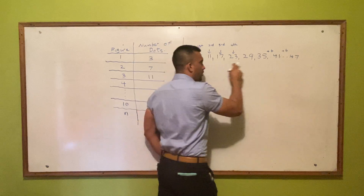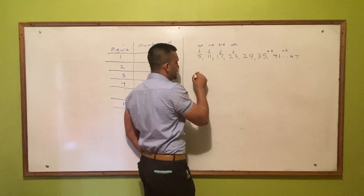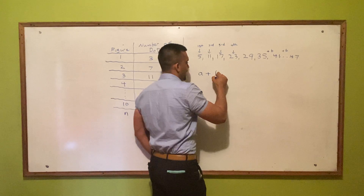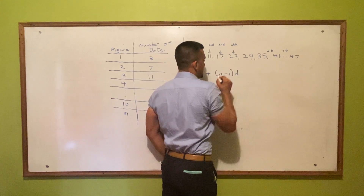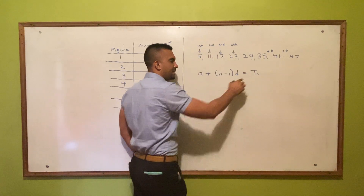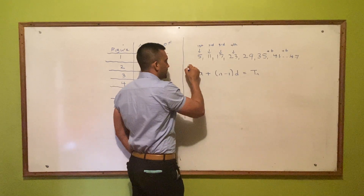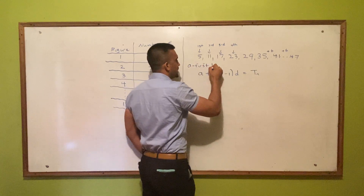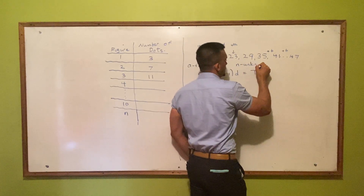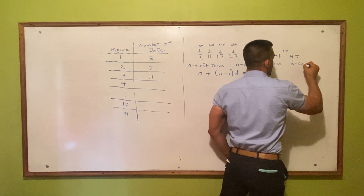We can formulate an equation to find any term of the sequence. The formula we use is: t_n = a + (n - 1) × d. This gives us whatever term you want to find in the sequence. t_n means the nth term. a is your first term in the sequence, n is the term you want to find, and d is your common difference — how much the sequence is increasing by.